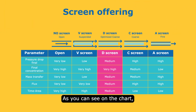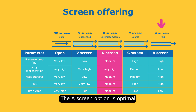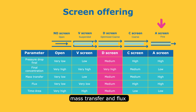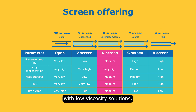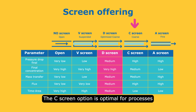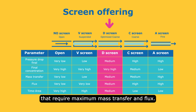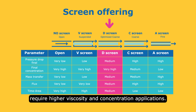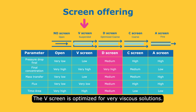As you can see on the chart, different solutions are possible. The A screen option is optimal for processes that require maximum mass transfer and flux with low viscosity solutions. The C screen option is optimal for processes that require maximum mass transfer and flux. The D screen is optimized for higher viscosity and concentration applications. The V screen is optimized for very viscous solutions.